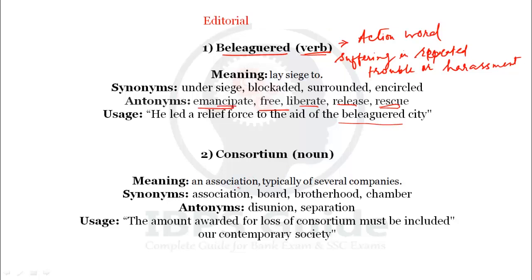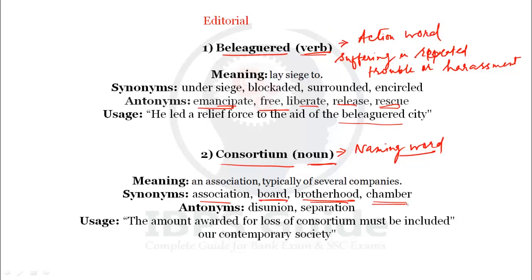Our second word is 'consortium.' Consortium is a noun — a naming word, and it can be the subject of a sentence. Consortium means an association, typically of several companies. We can say that a group of people or several companies together form an association — that is called a consortium.